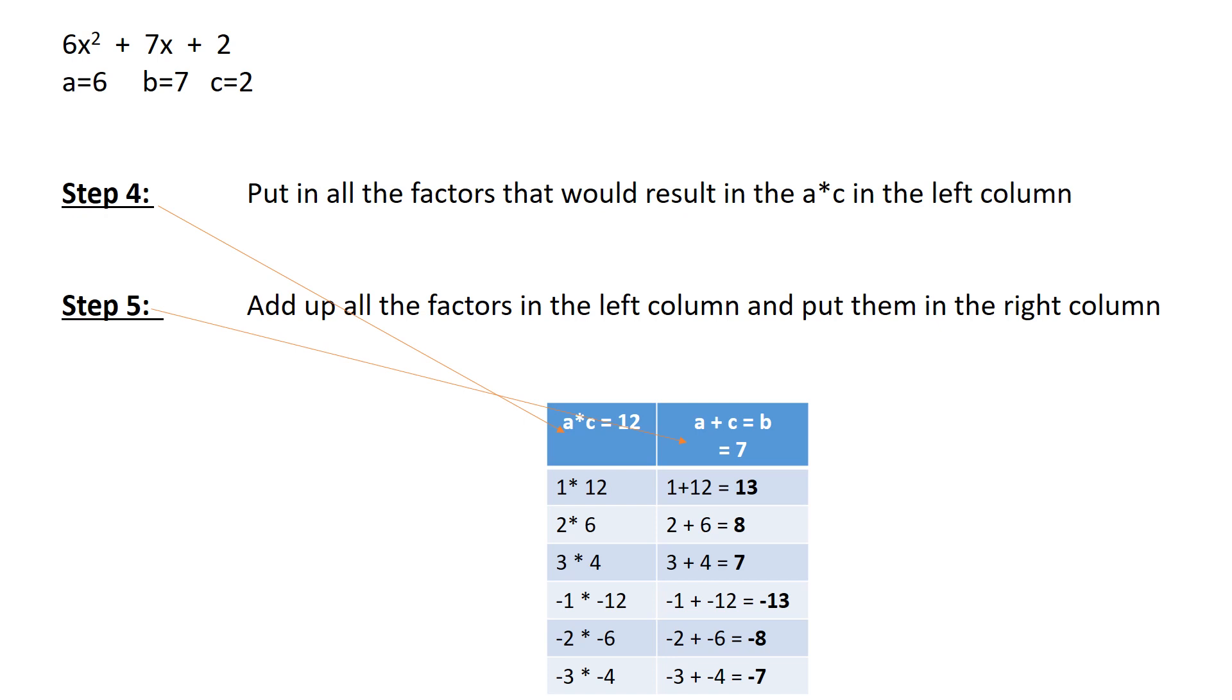As with the PQ method, the first thing we're going to do is find all the factors of 12. My A times C equals 12. And as you can see, 1 times 12 equals 12. 2 times 6 equals 12. 3 times 4 equals 12. And let's not forget our negatives. Negative 1 times negative 12 is positive 12. Negative 2 times negative 6 is positive 12. And negative 3 times negative 4 is positive 12.